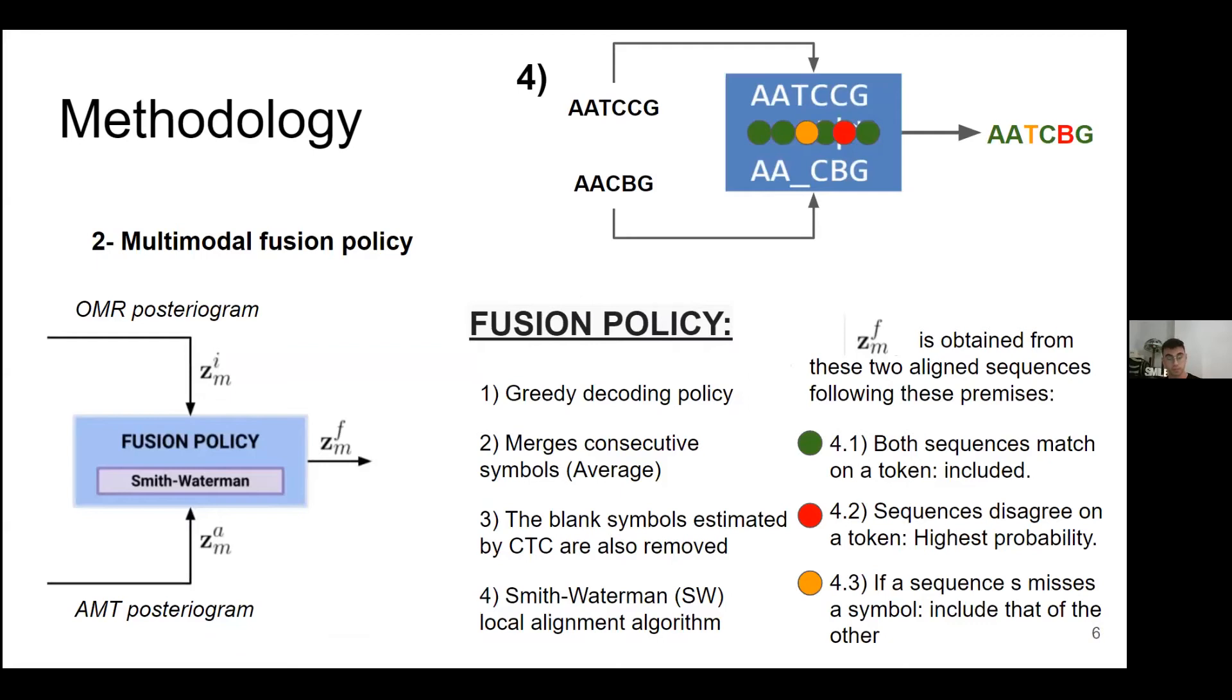This step we can divide into four steps. First of all, greedy decoding policy - what does this mean? We need a sequence of tokens, not a matrix. So we get the most probable token, and at the same time we have to save the probability of this token.